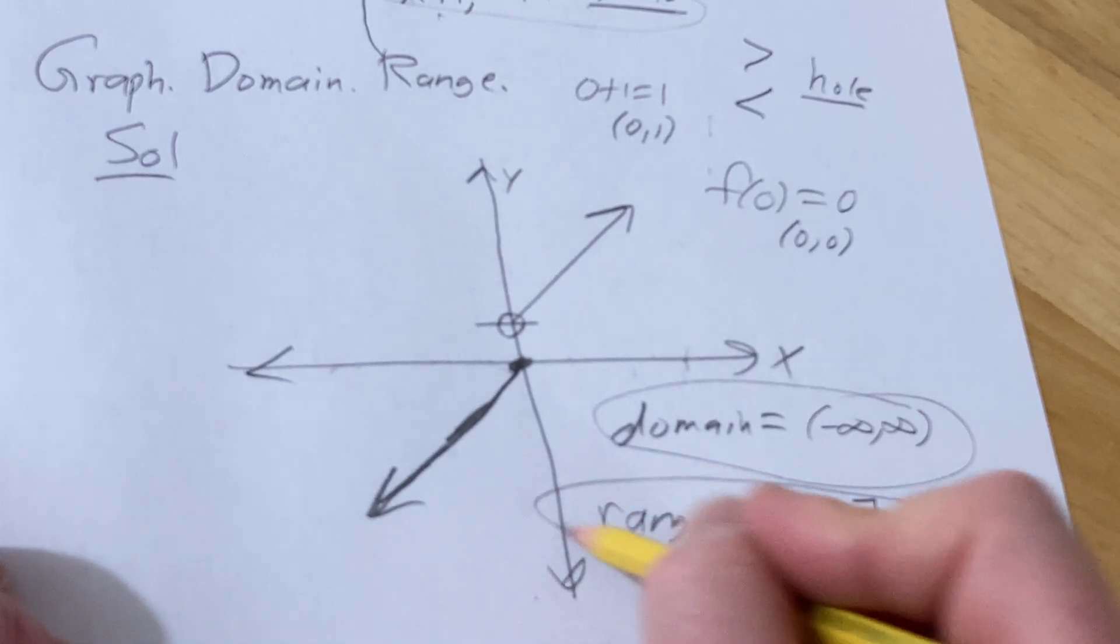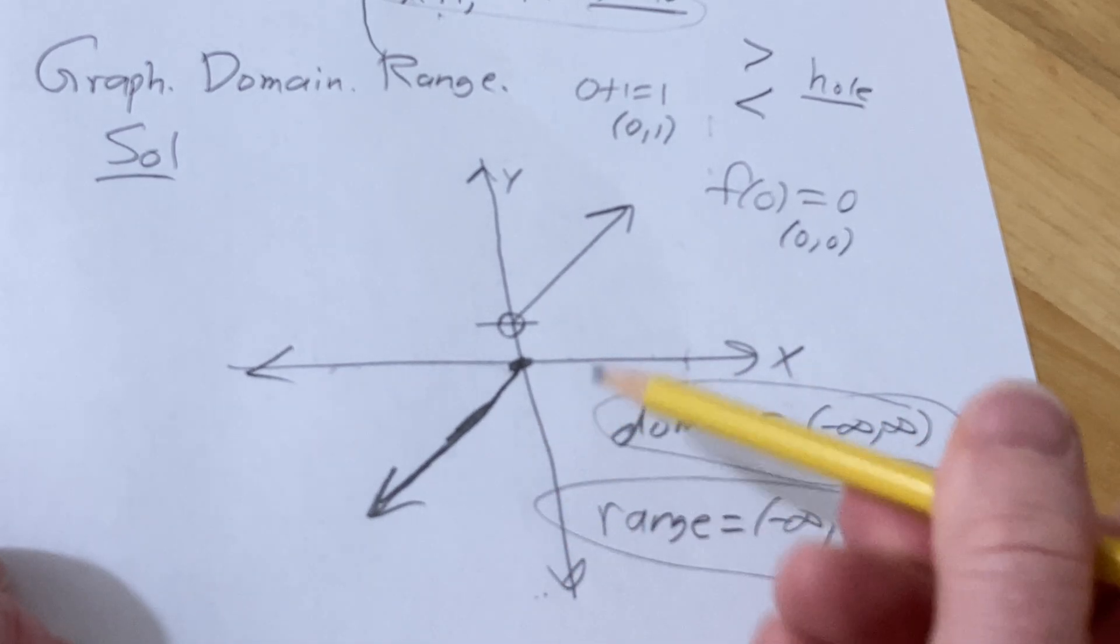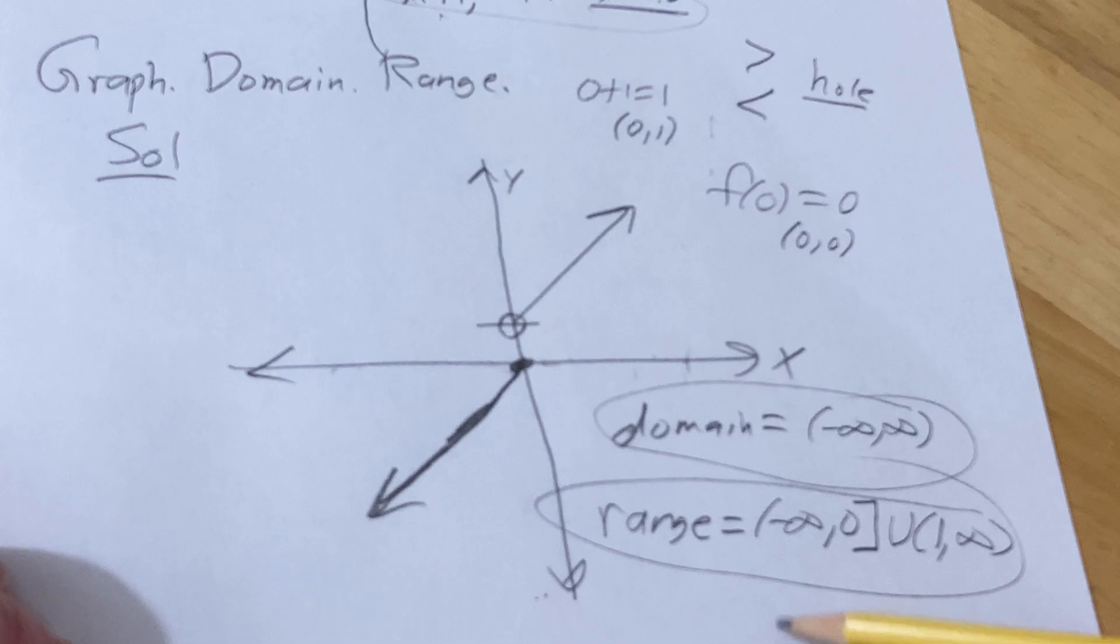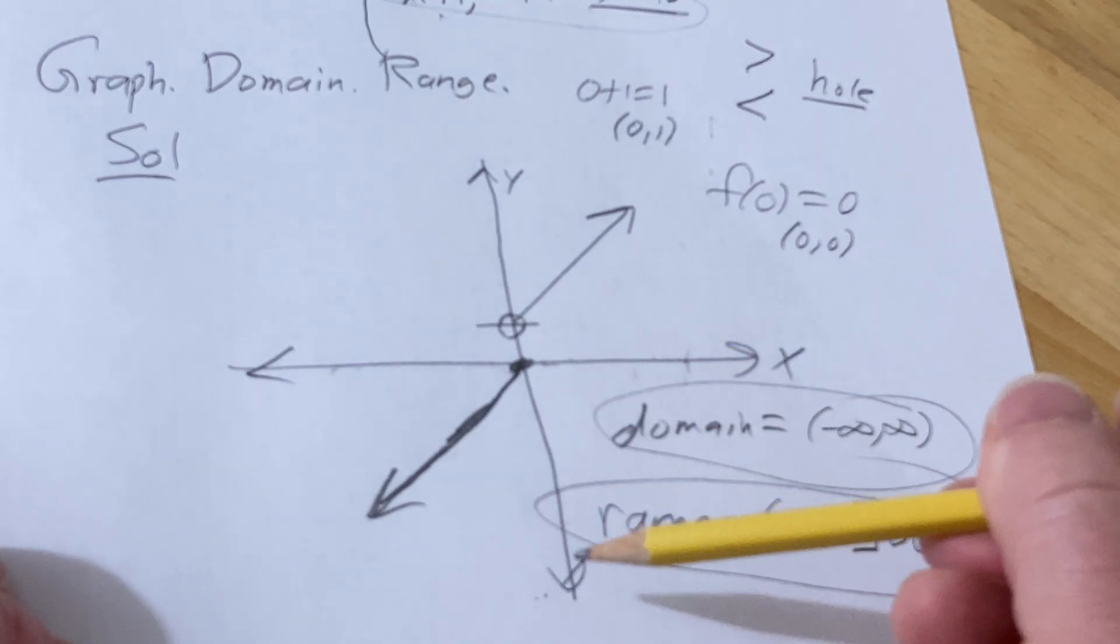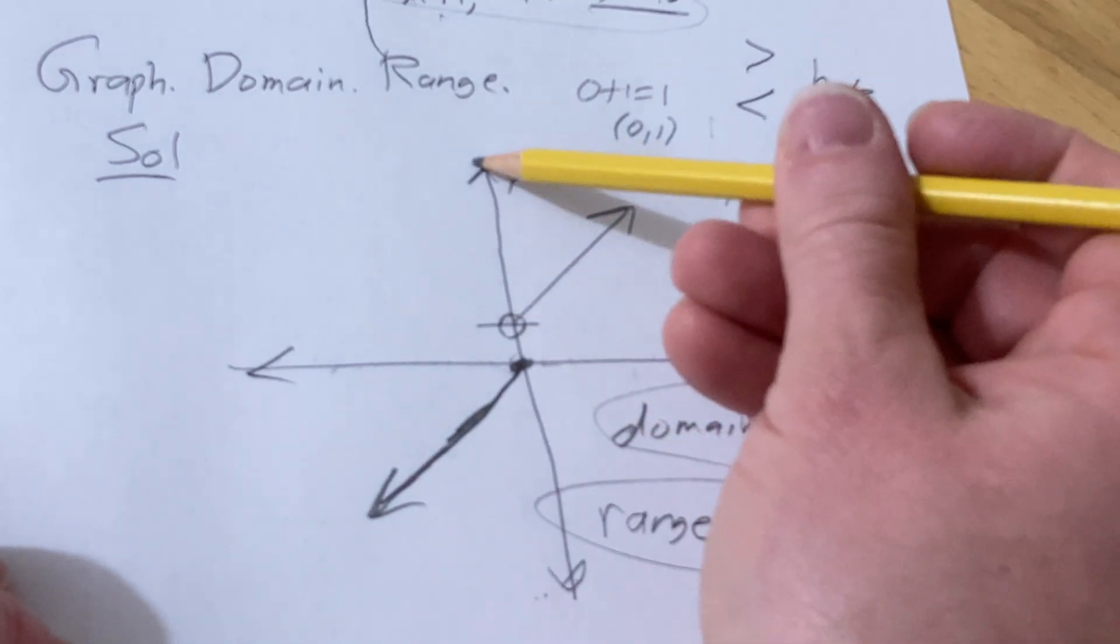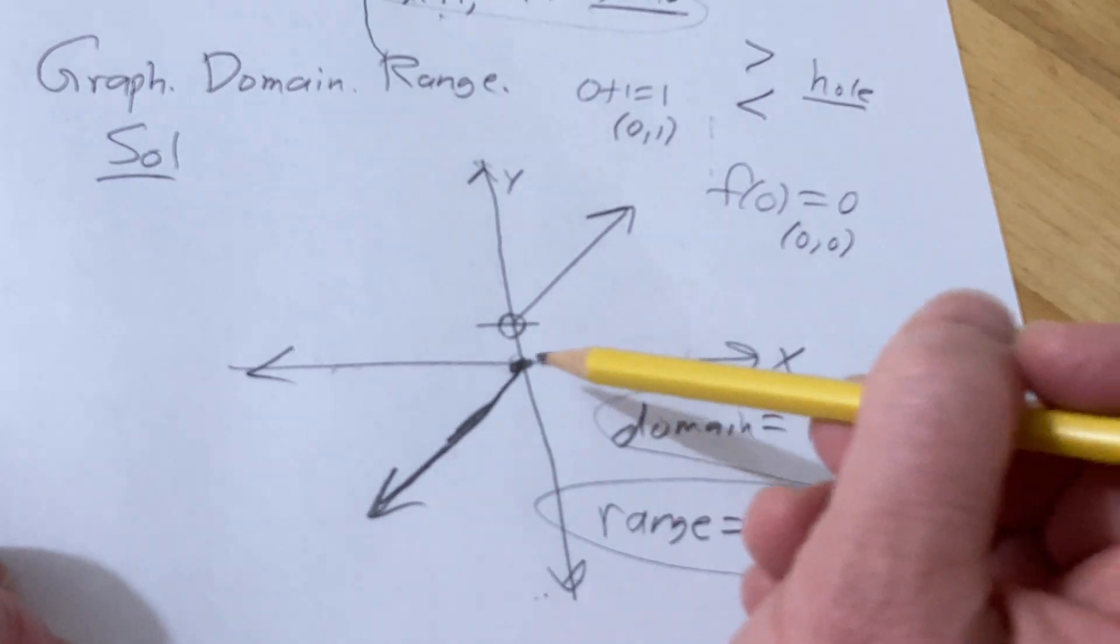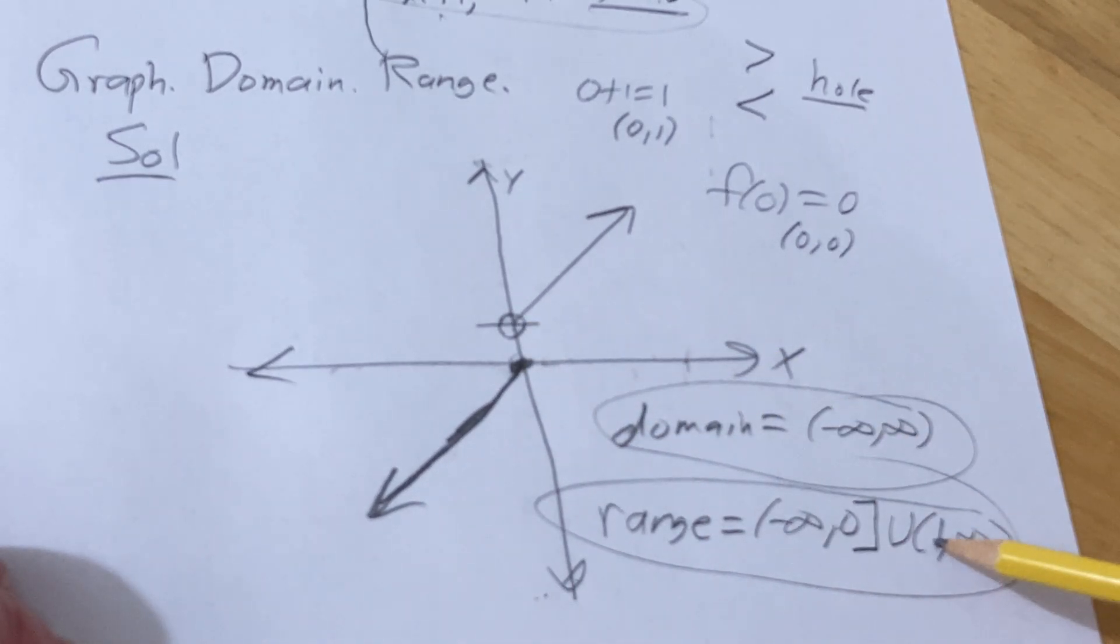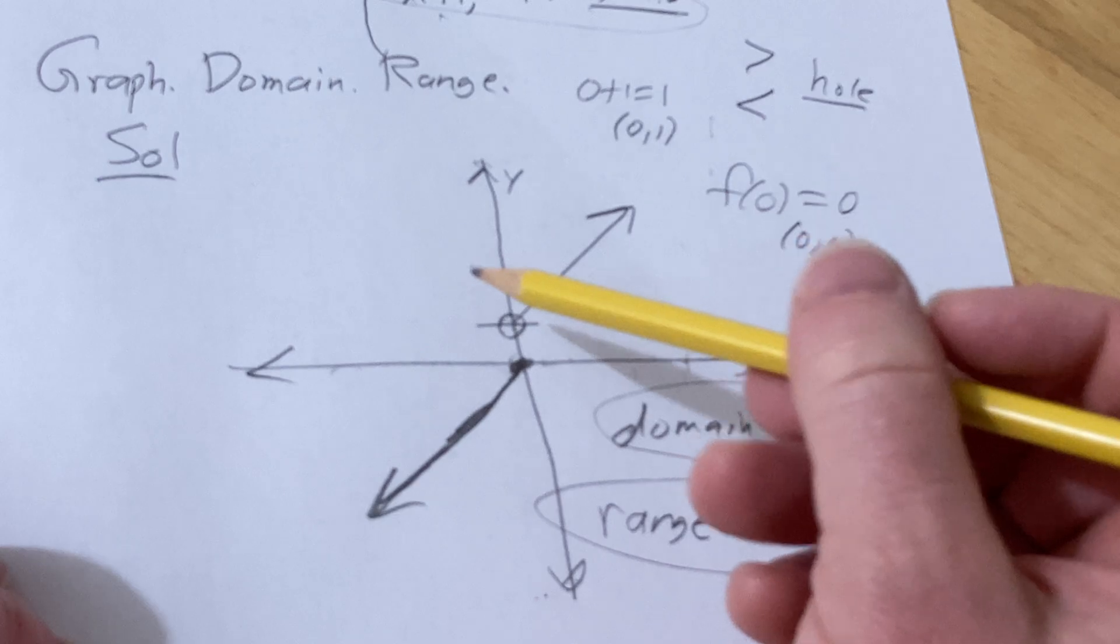So it's negative infinity to zero, one to infinity. You go from the bottom up to find the range, right? Negative infinity to zero, one to infinity. Bracket on this one because there's a solid dot. Parentheses on this one because it's not included because there's a hole.